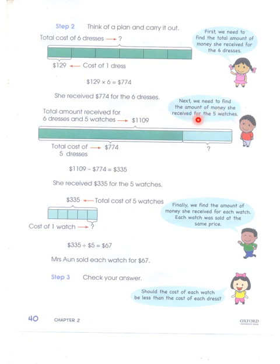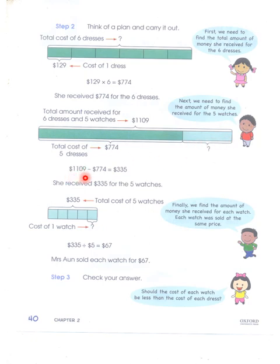Next, we need to find the amount of money she received for the five watches. The total amount received for six dresses and five watches was $1,109. The total cost of the six dresses was $774. So the cost of the five watches is 1,109 minus 774, which equals $335. She received $335 for the five watches.